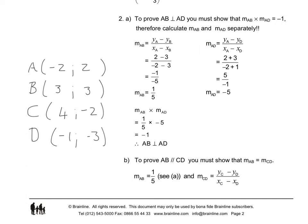Then the gradient of AD: we take the difference in y-values, 2 minus minus 3, which is 2 plus 3, and then the difference in x-values, minus 2 minus minus 1, which becomes plus 1. When we simplify, the gradient of AD is minus 5. When we take the product of the two gradients, 1 over 5 times minus 5 is indeed equal to minus 1, so we can conclude that AB is perpendicular to AD.